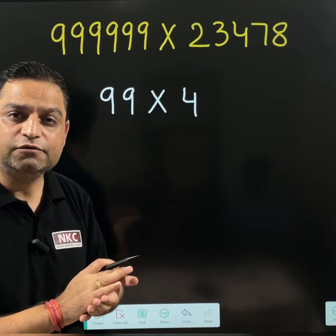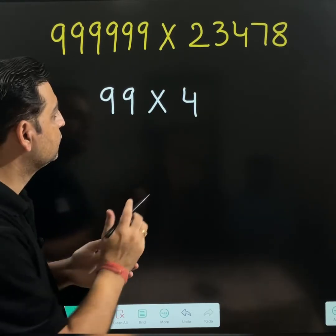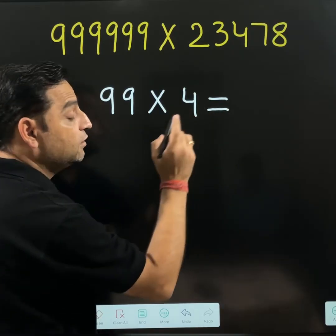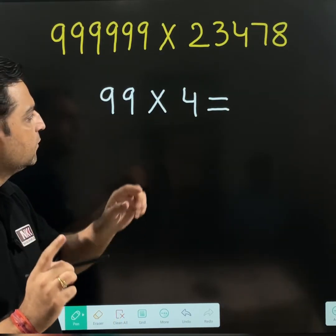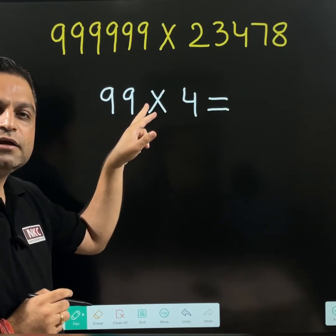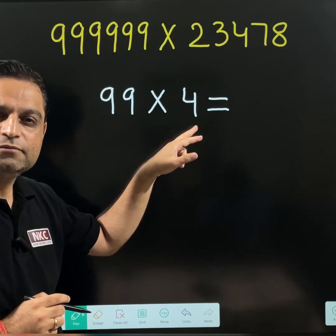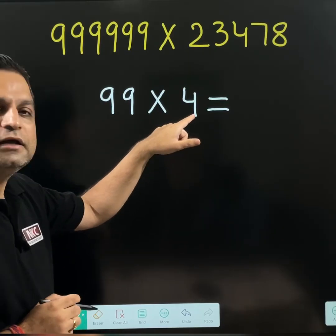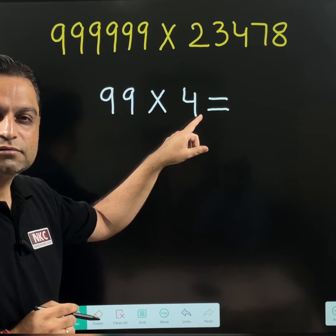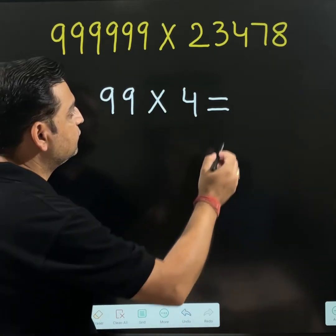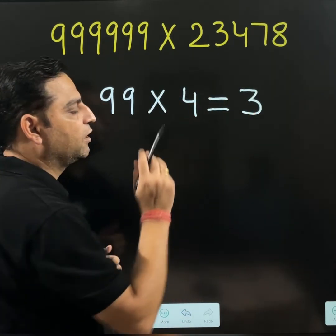Now I am going to tell you what you should do. See, directly I will write the answer. You are multiplying 99 with 4. Just take one lesser number than the 4. What is one lesser number? It is 3. So I am writing 3.